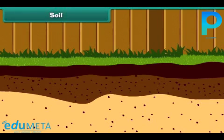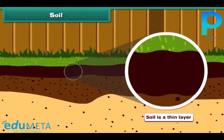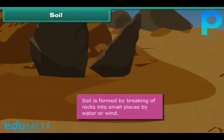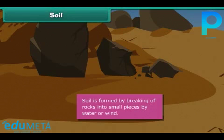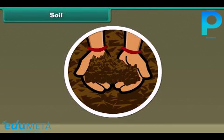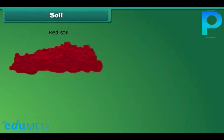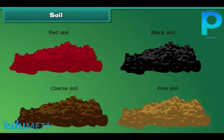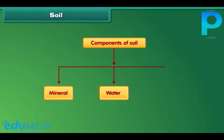Now we move on to soil. Soil is a thin layer of Earth's crust. It is formed by the breaking of rocks into small pieces by the influence of water or wind. Soils are of different types such as red soil, black soil, coarse soil, and fine soil. Minerals, water, and air are the three important components of soil.